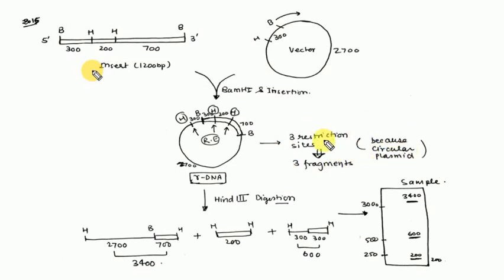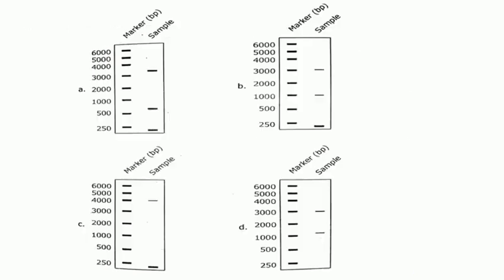Because it's a circular plasmid, the number of fragments generated and the number of restriction sites will be together. When you digest from HIN3, one fragment will be 600 base pairs, one will be 200 base pairs, and one will be 3400 base pairs (700 plus 2700). Looking at the options, option A is the correct answer.